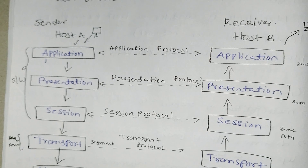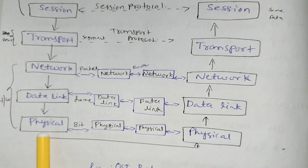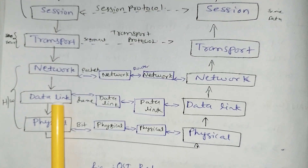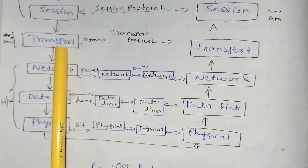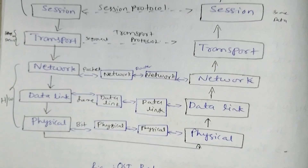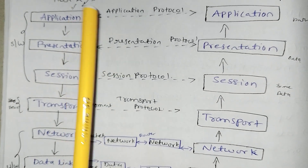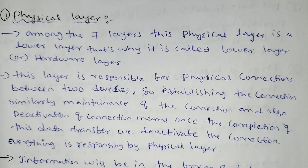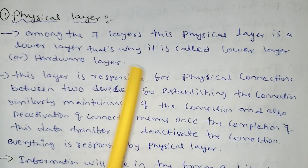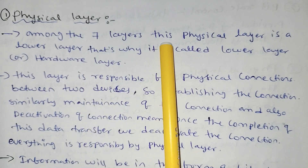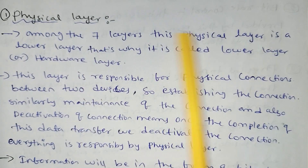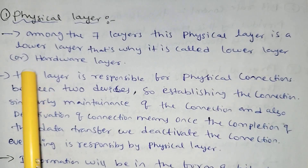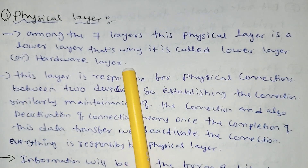What is the first layer? The first one is physical layer, then data link layer, network layer, transport layer, session layer, presentation layer, and application layer. The physical layer is the lower layer among the seven layers — that is why it is called a lower layer or hardware layer.